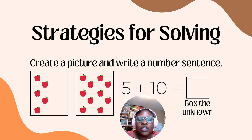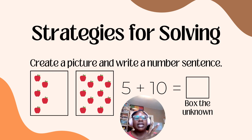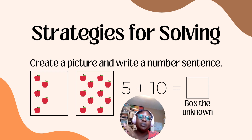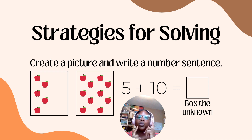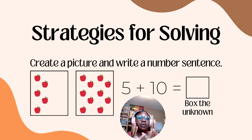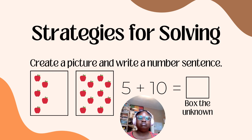Now we're going to take the information from the word problem and use the strategy where we have pictures and an equation to figure out the answer. Our strategy is to create a picture and write a number sentence. In the first box we have five apples, and in the second box we have 10 more apples. Now we have our number sentence: five plus 10, with a box at the end — the box of the unknown. Let's figure it out and see.